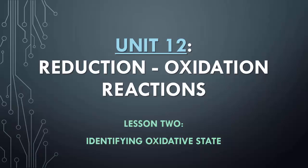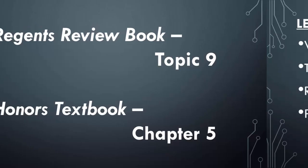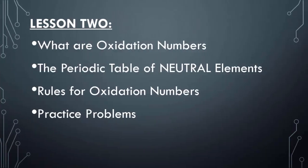Hey guys, welcome back. We're doing Unit 12, Reduction Oxidation Reactions, Lesson 2, Identifying Oxidation State. In this topic we are going to be covering what oxidation numbers are. We'll be talking about the periodic table of neutral elements, and we'll be going over the rules and some practice problems for you guys on oxidation numbers.